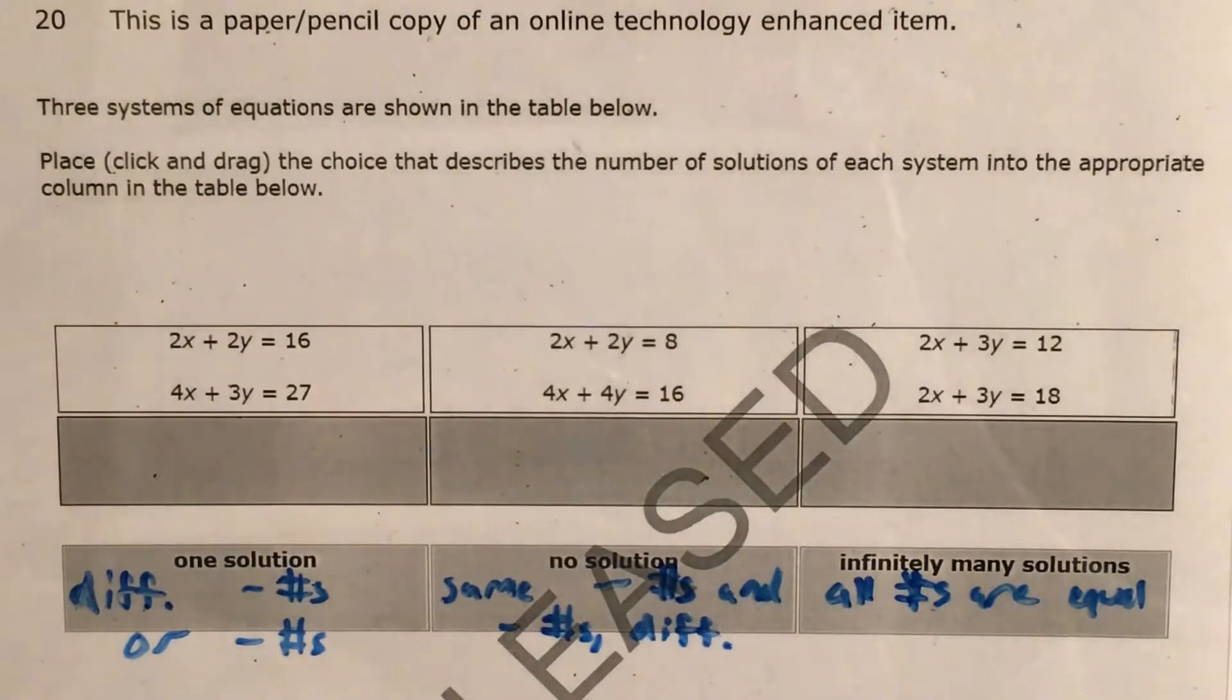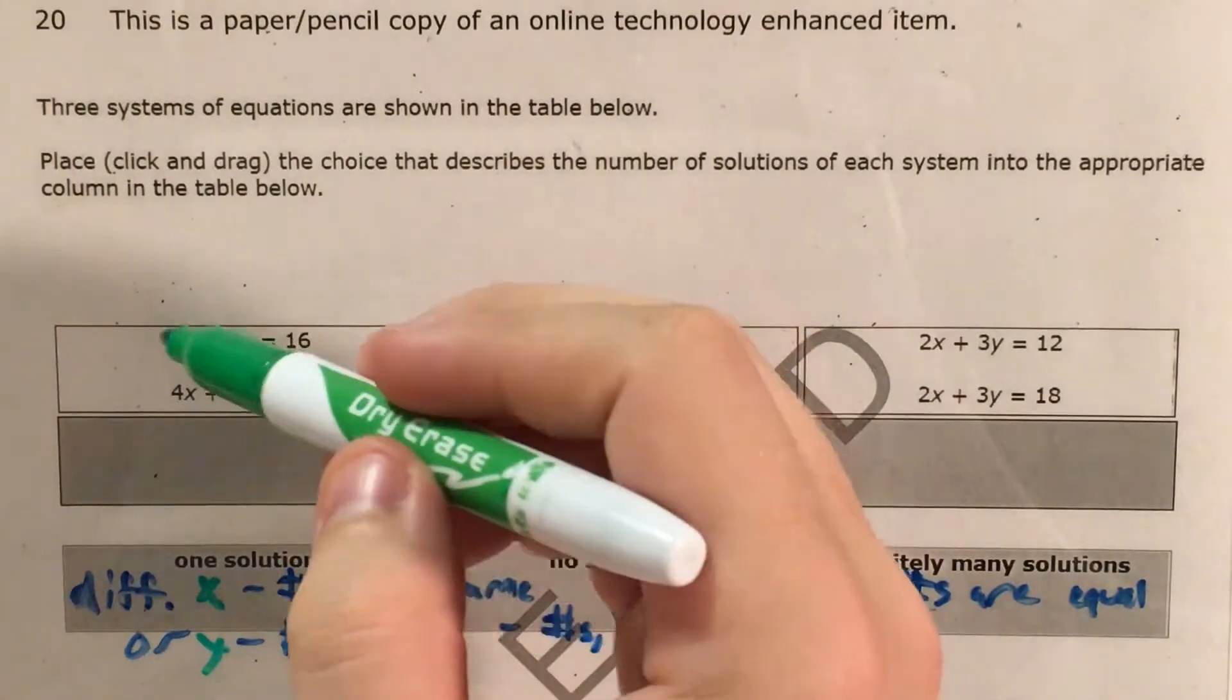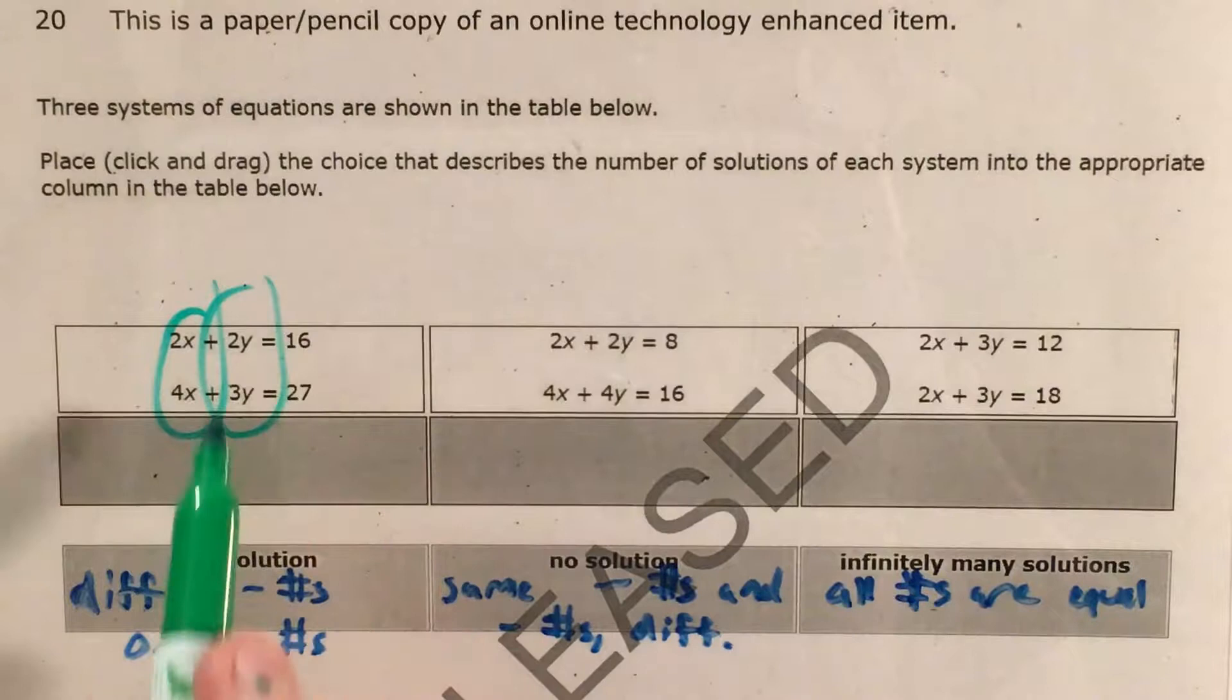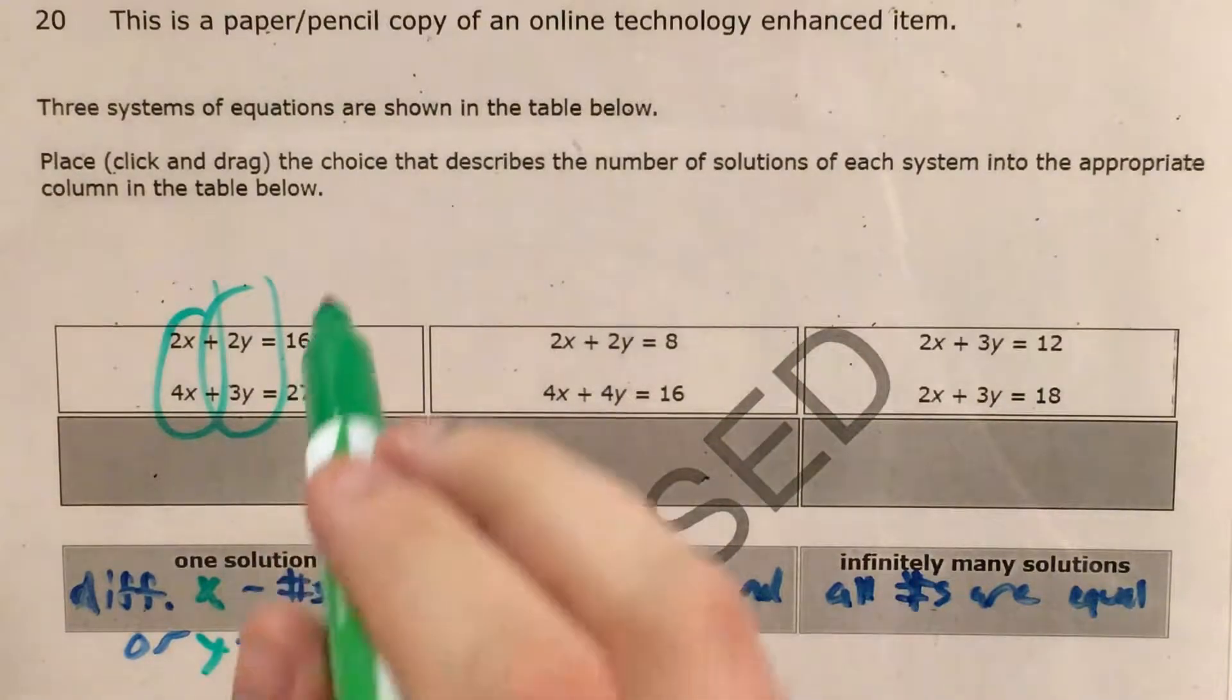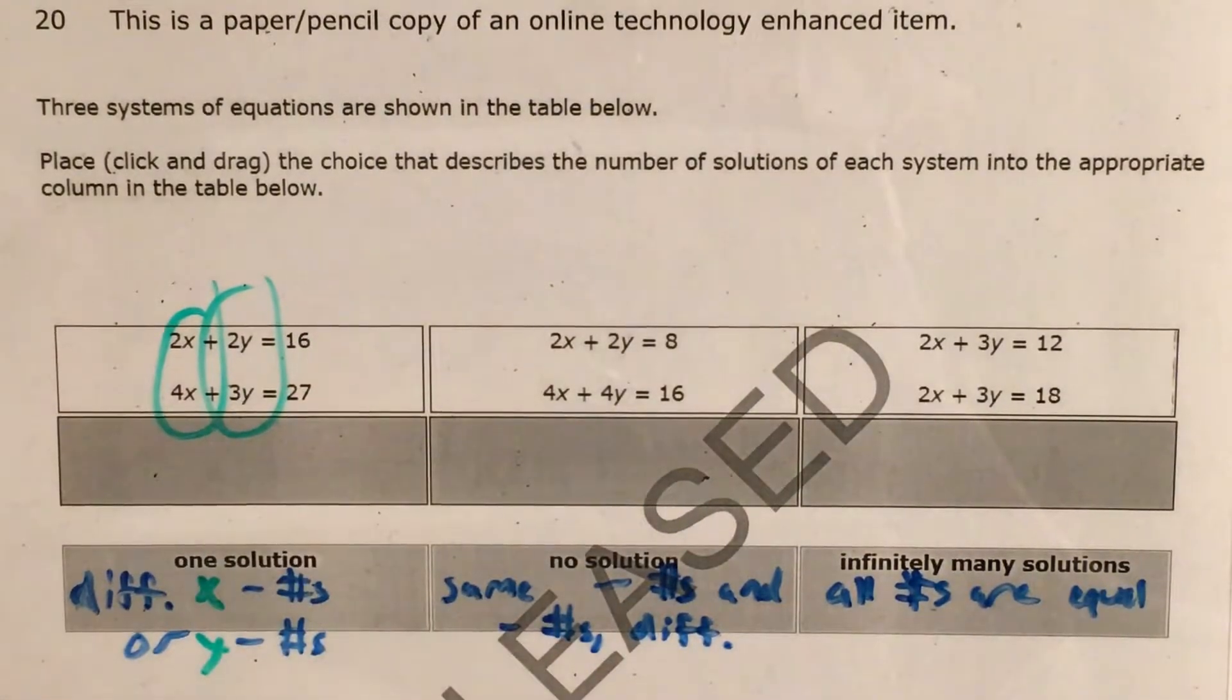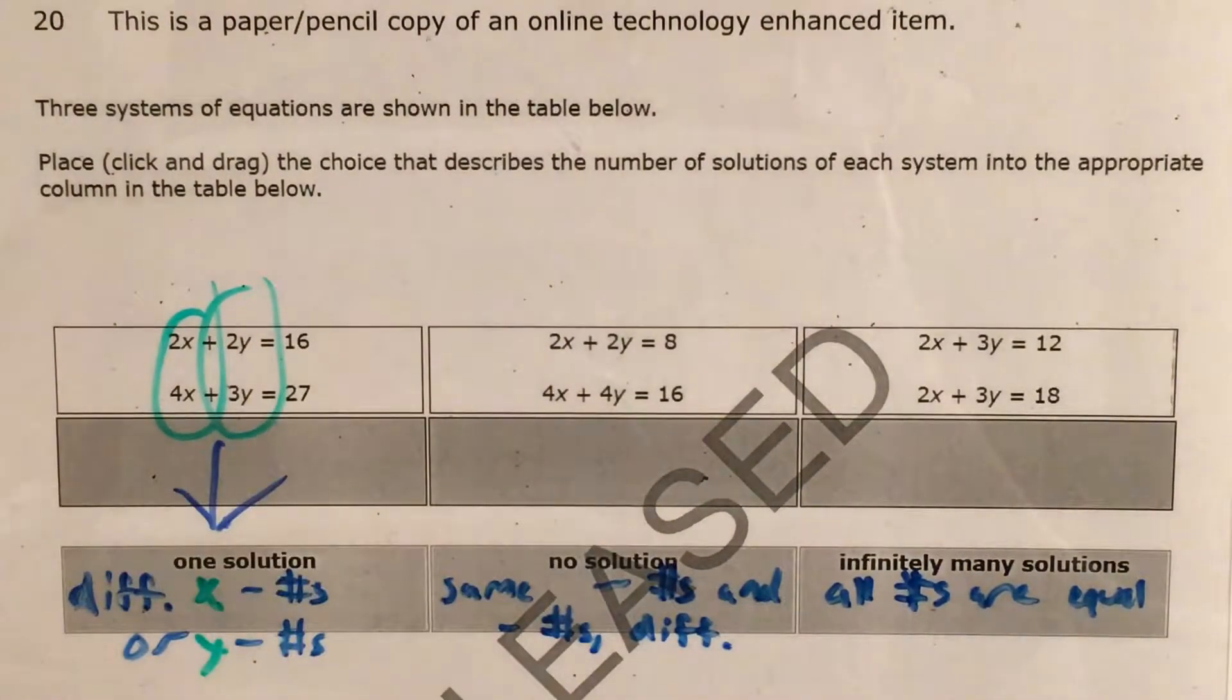If we look at our system and we see different x coefficients or different y coefficients from one equation to the next one. In this case, we actually have both 2x and 4x, 2y and 3y. We see different x numbers or different y numbers. So that tells me that this system has one solution.